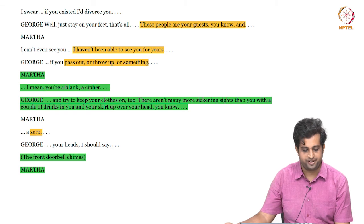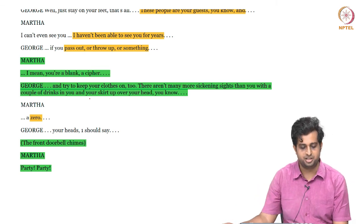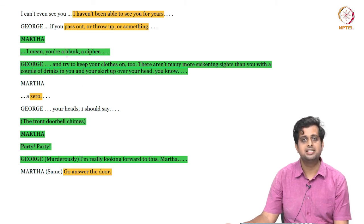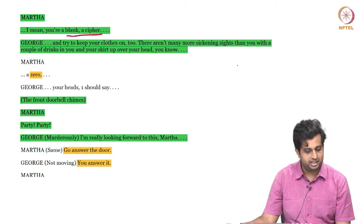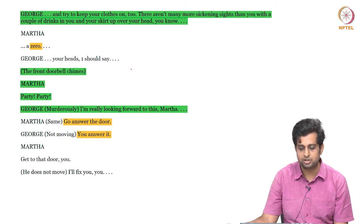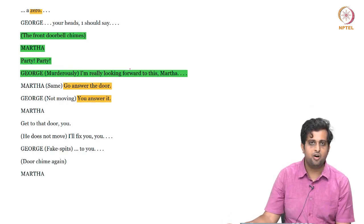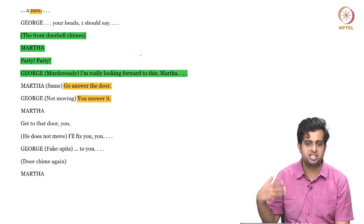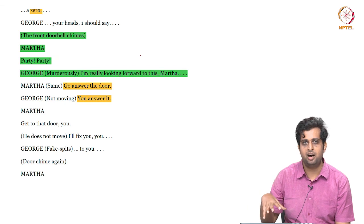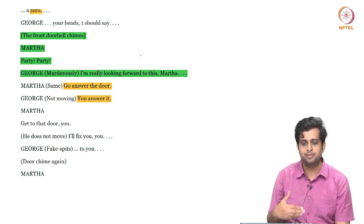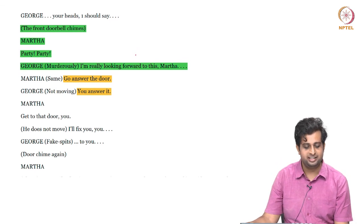The illusions, instead of effacing reality, actually strengthen the sense of reality — they reveal the reality you're trying to run away from. Martha calls George 'a blank, a cipher' and says 'you're a zero,' while George retaliates saying there are 'rarely more sickening sights than you.' They're already starting to fight, locking horns before the guests have arrived. There is a pressure cooker situation brewing in the house that these unsuspecting guests will walk into — almost like a spider's web, with Nick and Honey as the unsuspecting flies who think this is a place of hospitality.